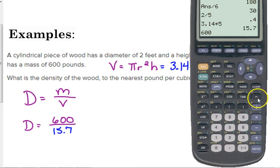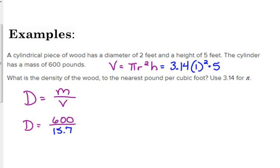So, then we divide. 600 divided by 15.7 gives us a density of, they said, the nearest pound. So, density is 38 pounds per cubic foot. Now, usually, you don't have to worry so much about finding the units. But, it's a good habit to be in to go ahead and write down the units when you don't have that multiple choice answer choice.